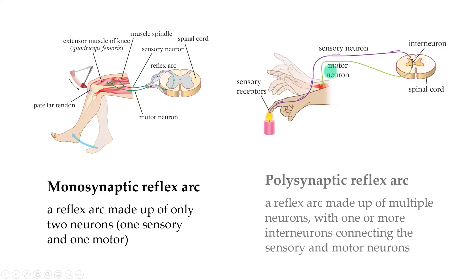On the right is a polysynaptic reflex arc because there's more than one junction. In this case, there's one here and one over here. One's not necessarily better than the other, although monosynaptic arcs are simpler.